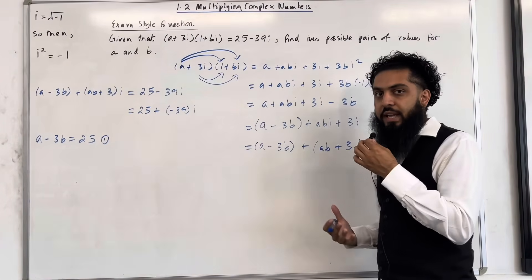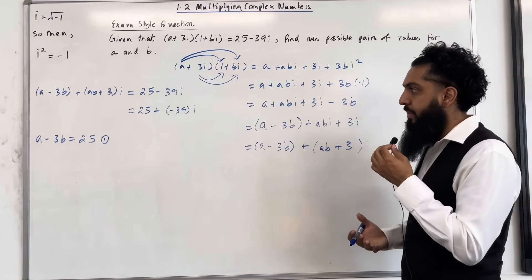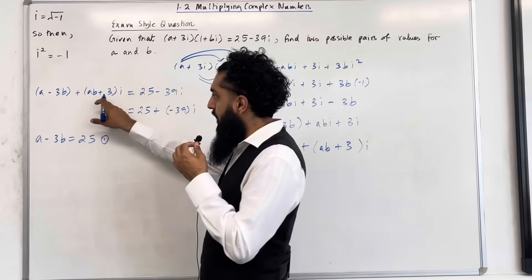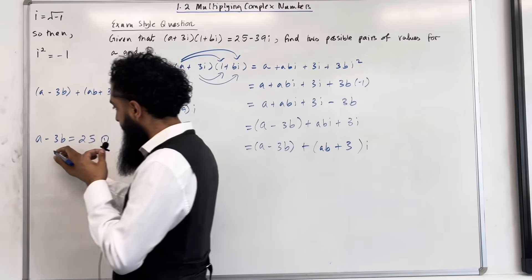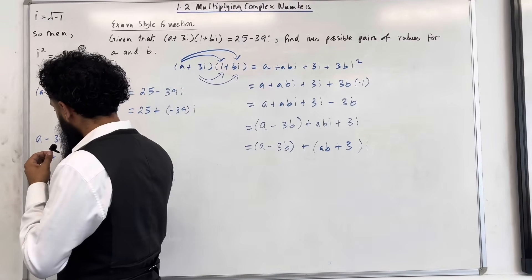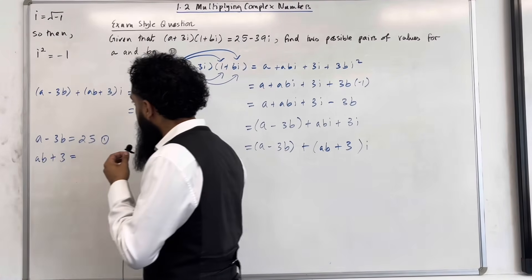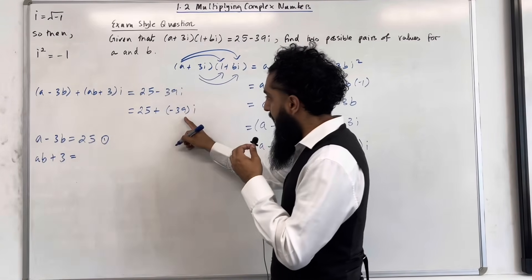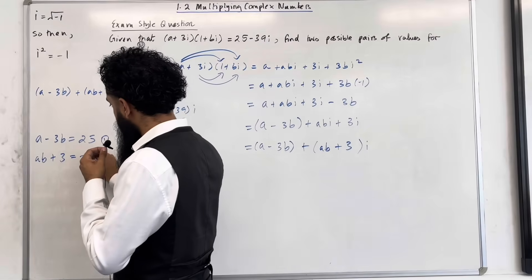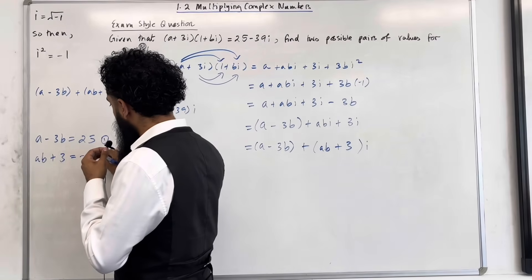Now I'm going to compare the imaginary terms. So ab plus 3 has to equal minus 39 — equation number 2.